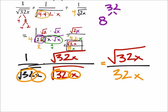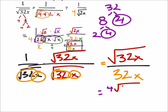8 and 4, and then a 4 and a 2. So we got a pair of 4s. So this ends up being a 4 times the square root of 2x all over 32x.